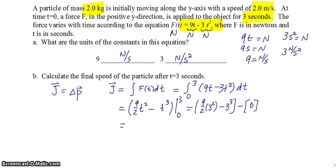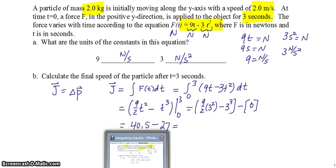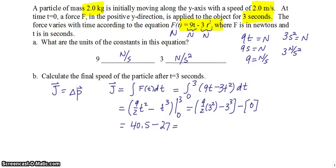So (9/2)(3²): 3² is 9, 9 times 9 is 81, half of 81 is 40.5. 3³ is 27. And 40.5 - 27 is 13.5 newton seconds.